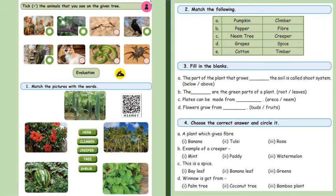Match the picture with the words. Herb is the mint leaf, climber is snake gourd or bitter gourd, creeper is watermelon, then we have coconut tree and shrub as hibiscus tree. Match the following: pumpkin is a creeper, pepper is spice, neem tree is timber, grapes is climber, cotton is fiber.